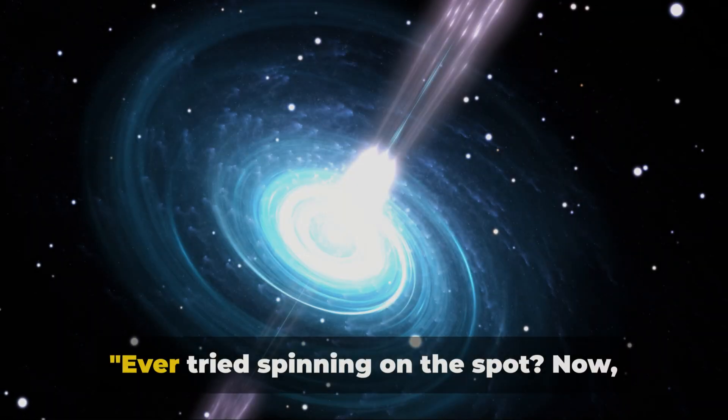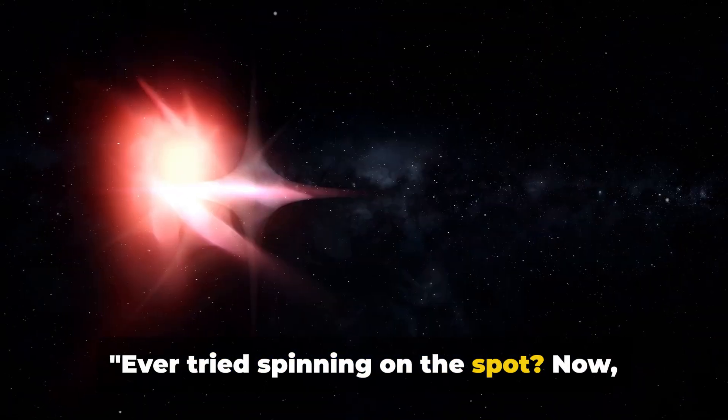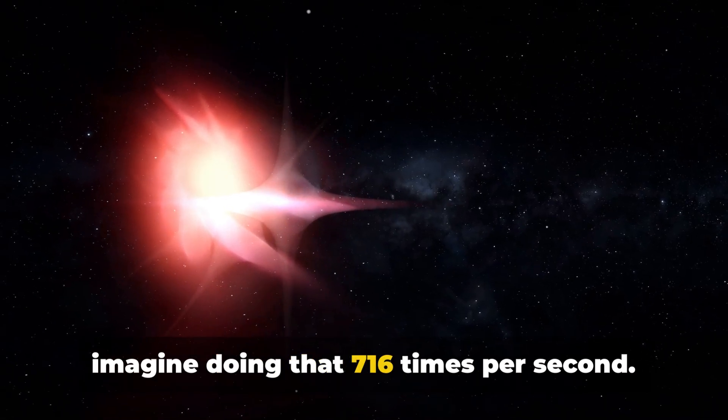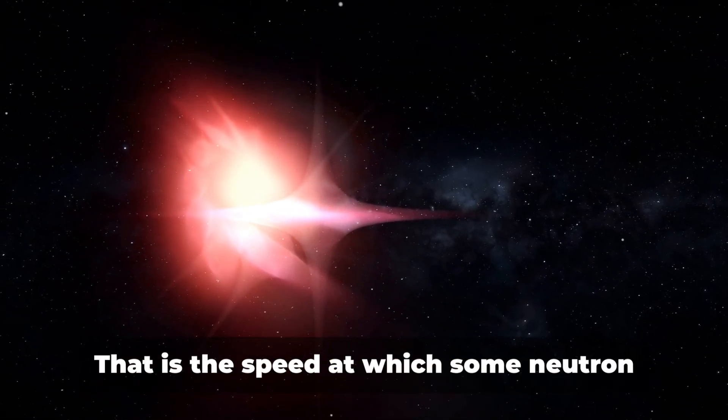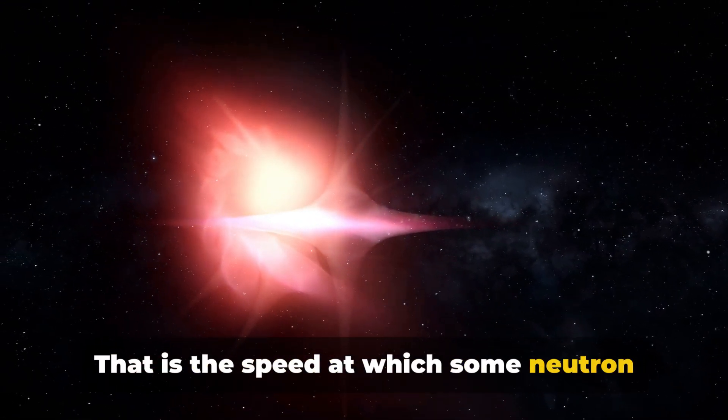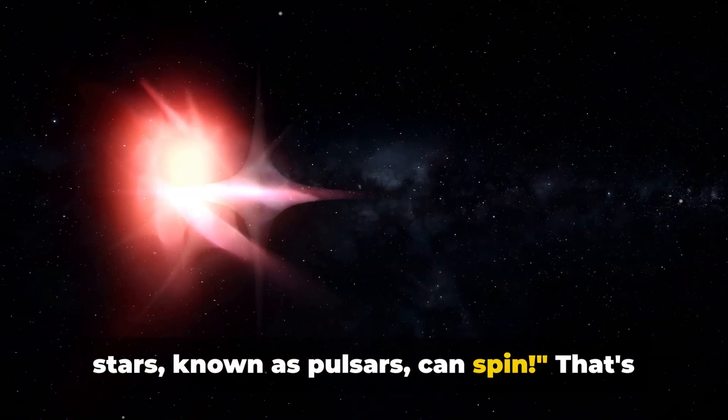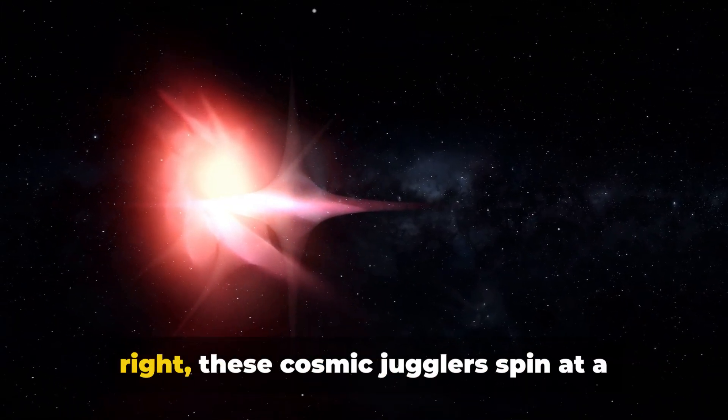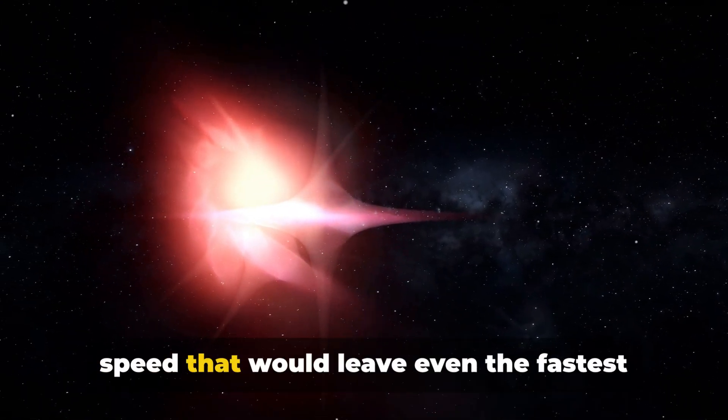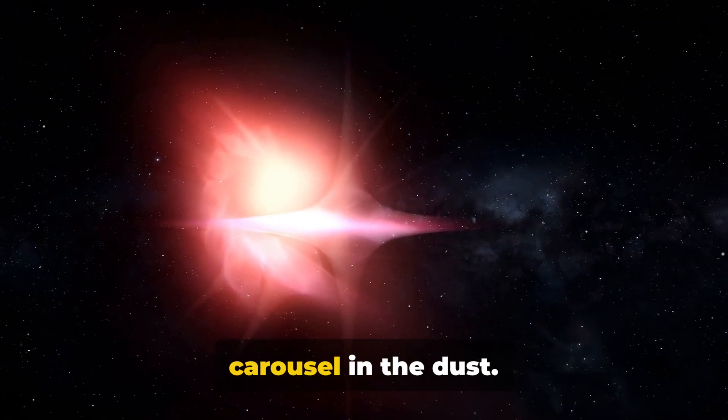Ever tried spinning on the spot? Now imagine doing that 716 times per second. That is the speed at which some neutron stars, known as pulsars, can spin. That's right, these cosmic jugglers spin at a speed that would leave even the fastest carousel in the dust.